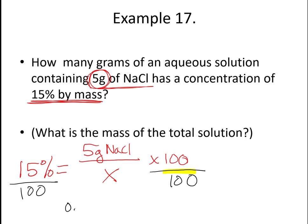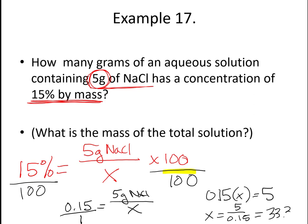And when I do that, I will get 0.15 equals 5 grams of sodium chloride over x. If I put that over one, that gives me 0.15 times x equals 5. If I isolate my x, 5 divided by 0.15, that is going to equal 33.3 repeating grams. And that is the answer to my problem.